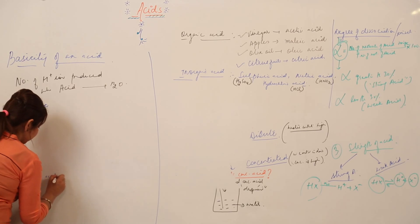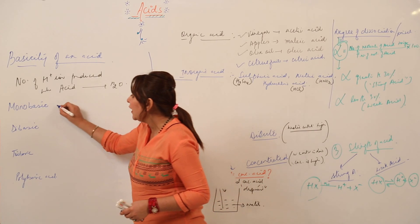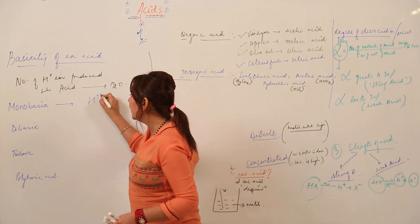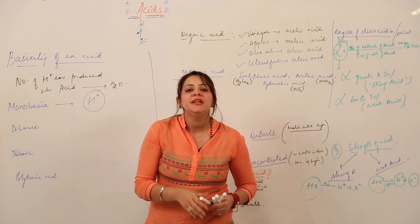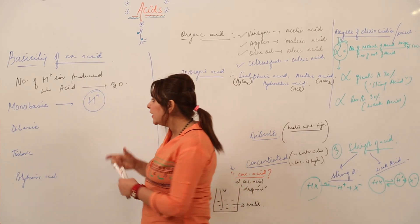If any acid dissolved in water gives one hydrogen ion, it is regarded as mono basic in nature. If an acid dissolved in water gives two hydrogen ions, it is said to be di basic.